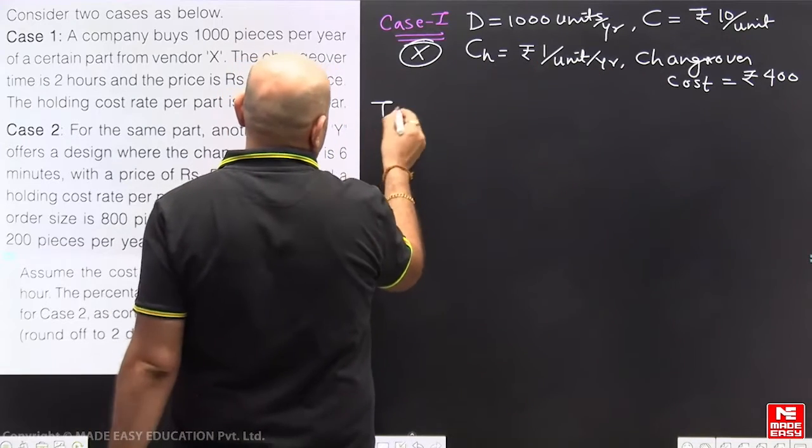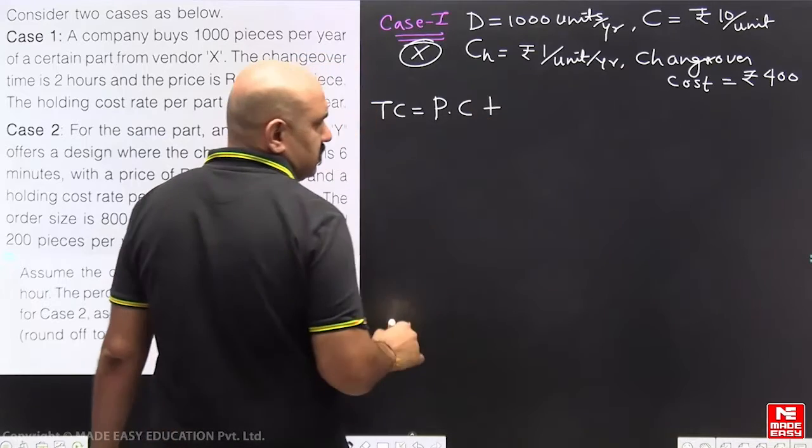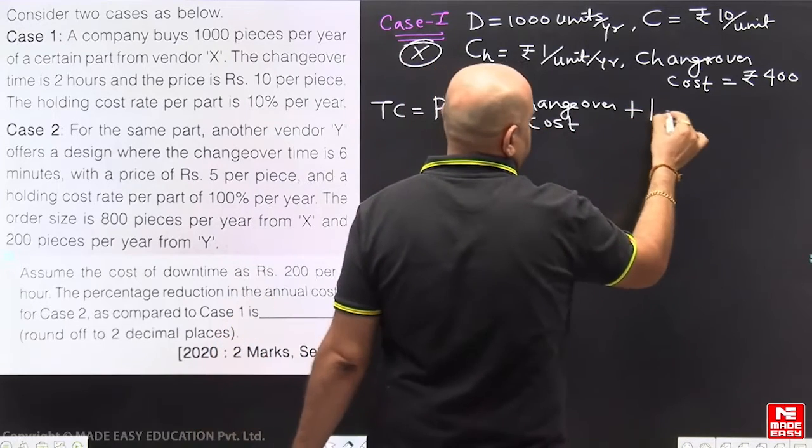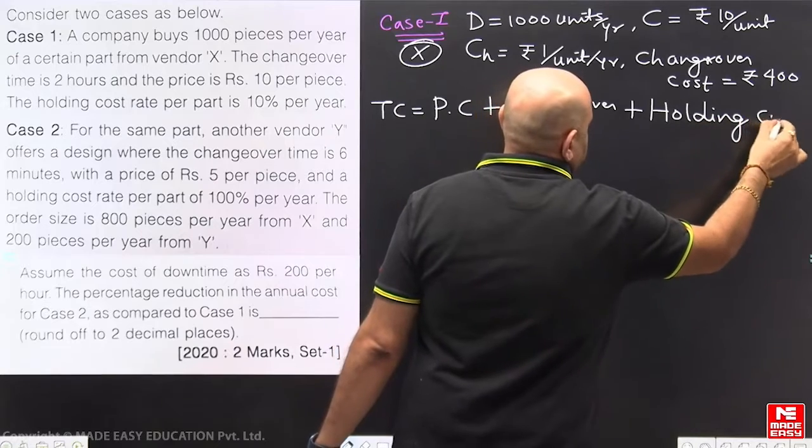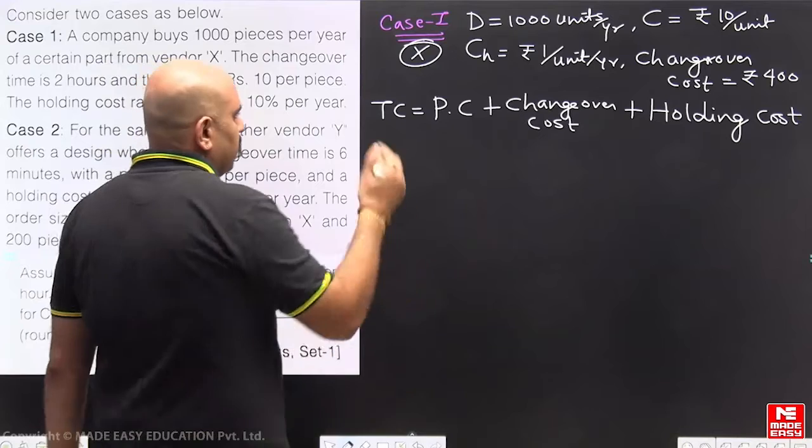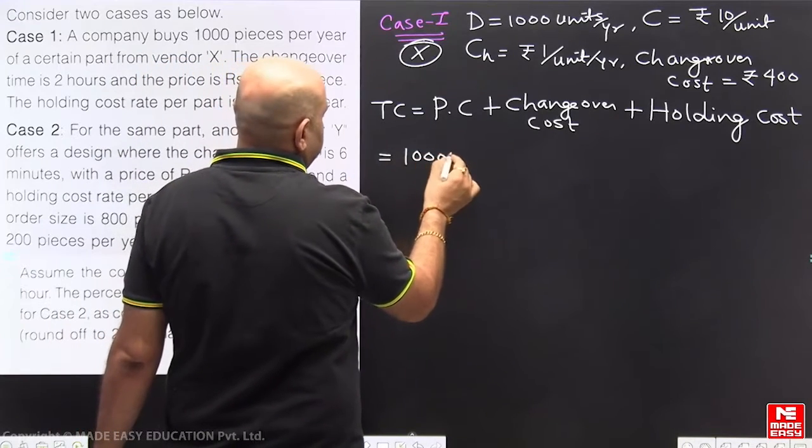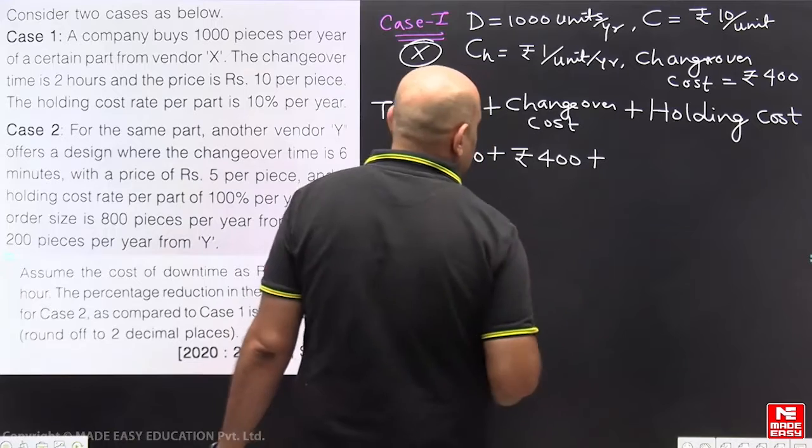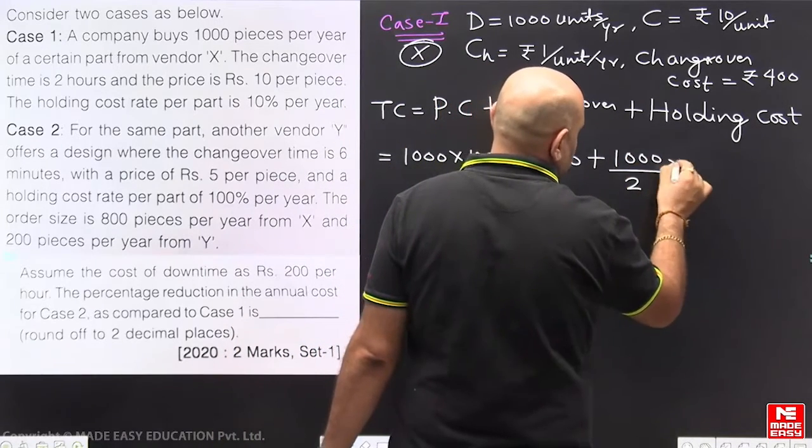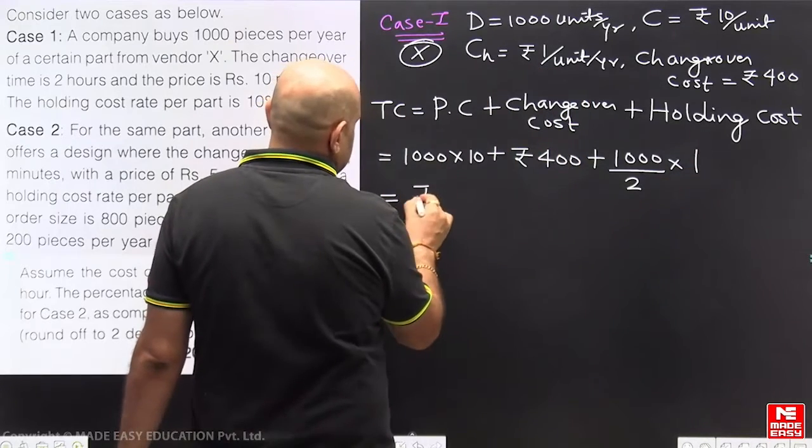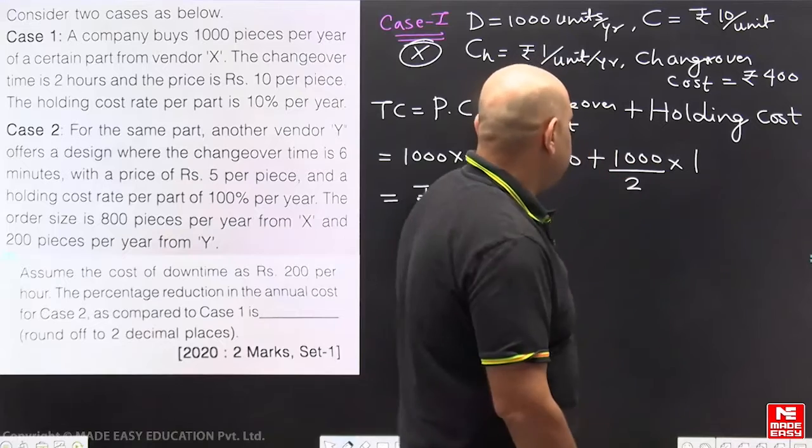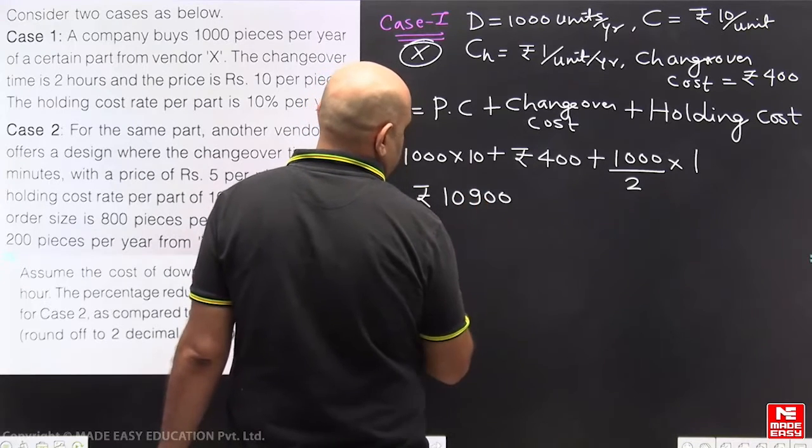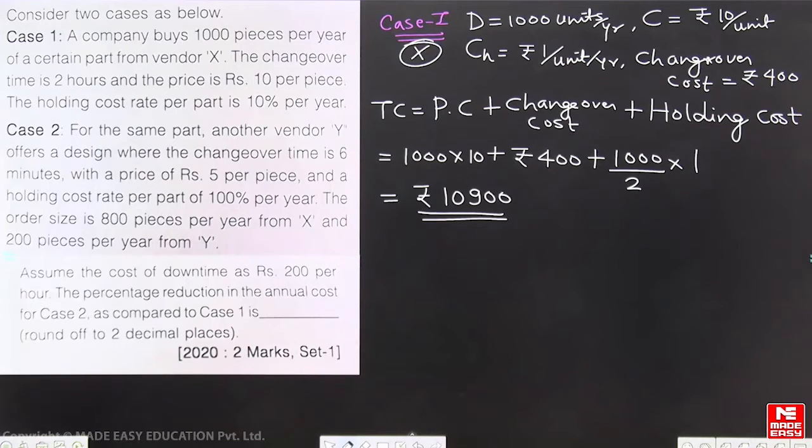Now the total cost will be material cost or purchase cost PC plus changeover cost plus holding cost. Remember changeover cost is almost like our setup cost. Now 1000 units we have to purchase into Rs. 10. Changeover cost directly Rs. 400, because 2 hours required. And holding rate will be 1000 - order quantity Q by 2 into CH holding rate is 1. So it will come out to be 10,000 plus 500, and 10,000 plus 5 plus 4 is 10,900. That will be the total cost when X will be working: 10,900.